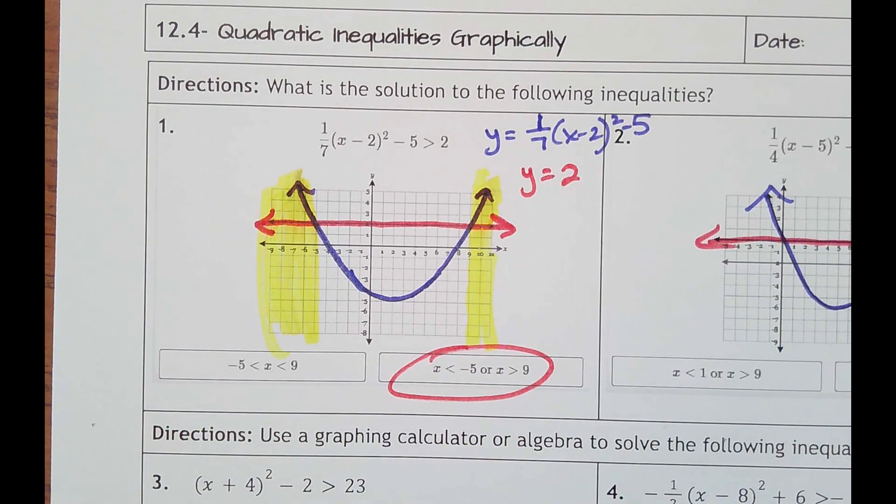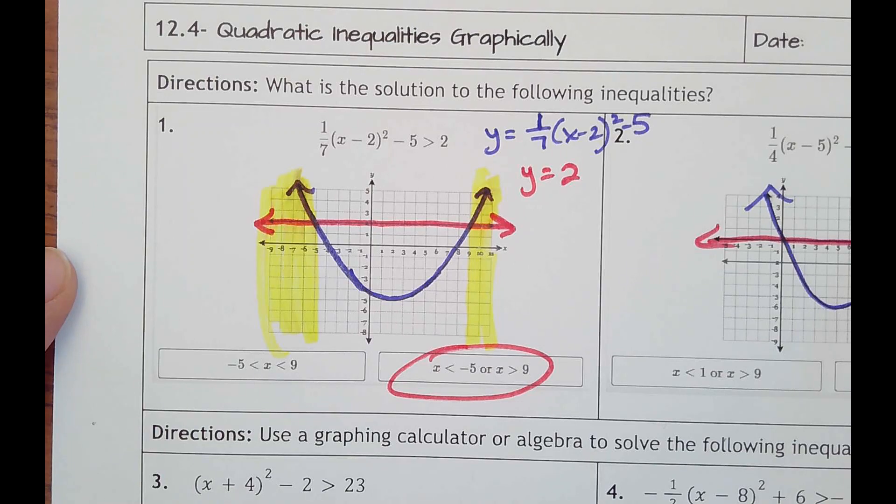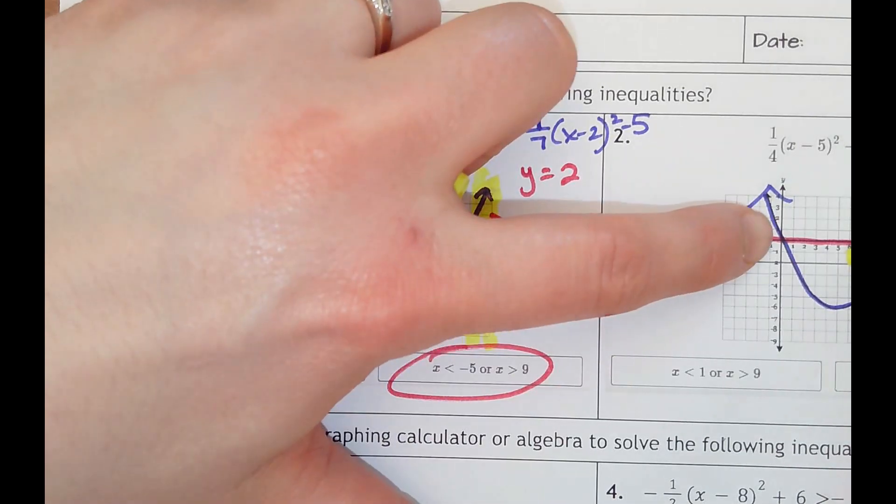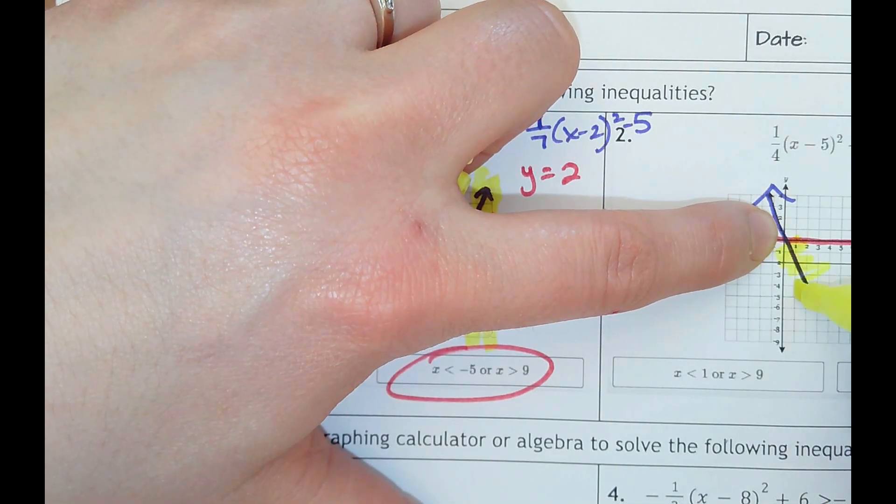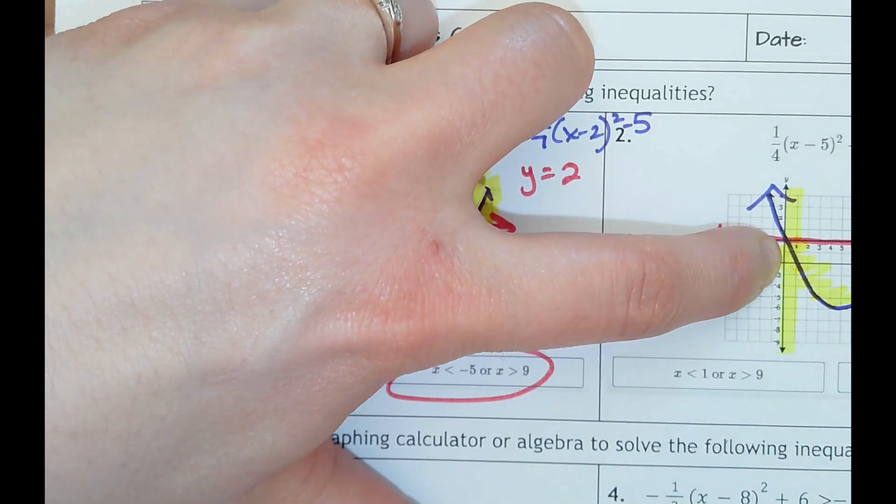And then number two, same thing, where they plotted two different ones. This time we want to know where is the quadratic function less than negative 2. So where is it below the line? Would be in here, so it'd be from where they intersect.